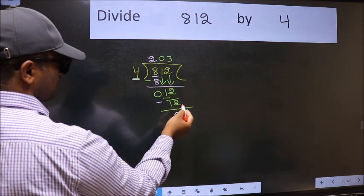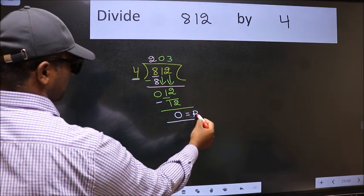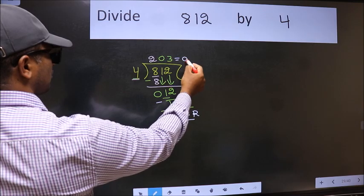No more numbers to bring it down. So we stop here. This is our remainder and this is our quotient.